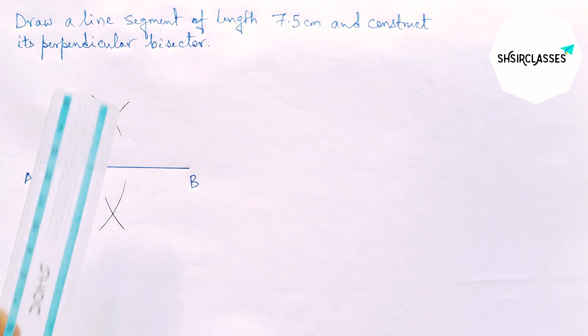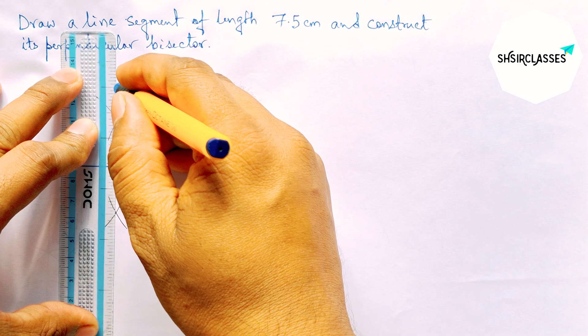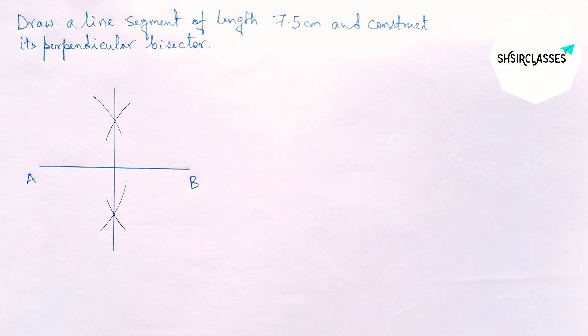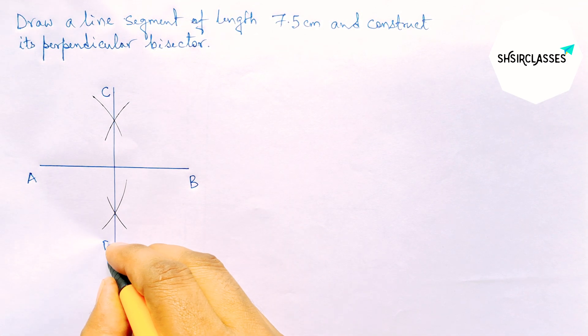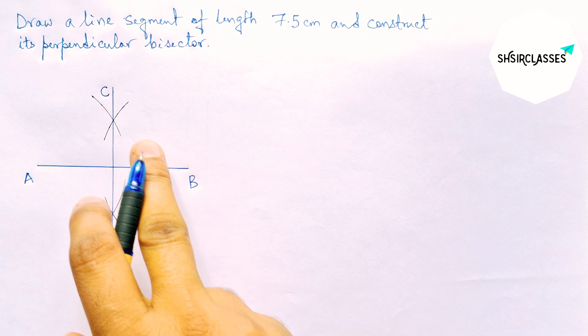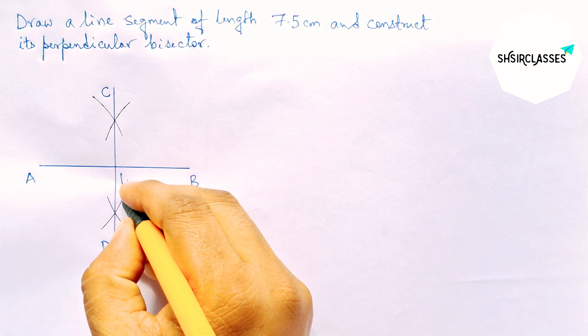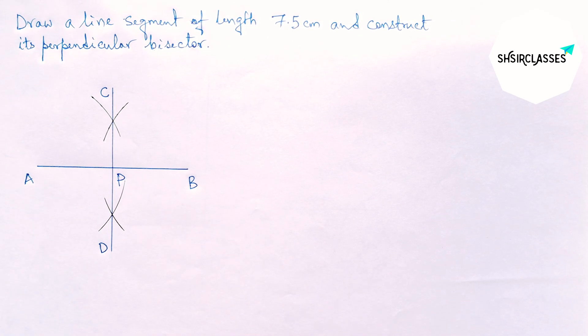Now joining this, and this is the required perpendicular bisector. Labeling here point C and here D. Both the lines meet at a point, so taking here point O.